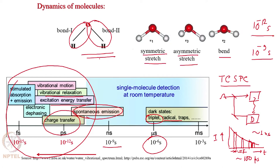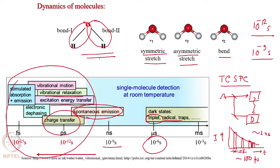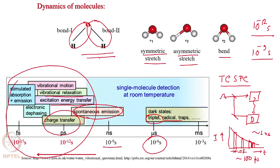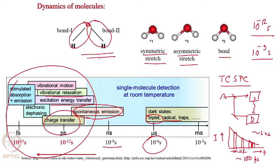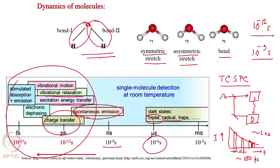If you use a longer pulse - say a nanosecond pulse to understand a femtosecond process - during the one nanosecond excitation window the molecular dynamics will already be over. A bond vibrating on a picosecond timescale will vibrate 1000 times within a one nanosecond window. So you are initiating the process but you cannot observe it because everything is averaged out. You must excite the system during a time scale much shorter than one picosecond.